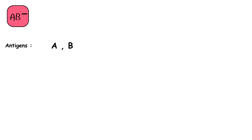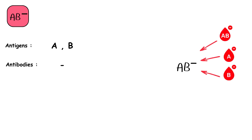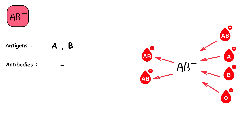AB negative blood type has A and B antigens on the red blood cells but lacks the RH antigen, and has no anti-A or anti-B antibodies in the plasma. These individuals can receive blood from AB negative, A negative, B negative, and O negative donors. They can donate to AB positive and AB negative recipients. Only 1% of the global population has AB negative blood, making it the rarest blood type.